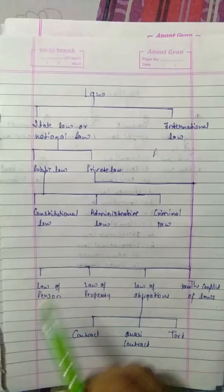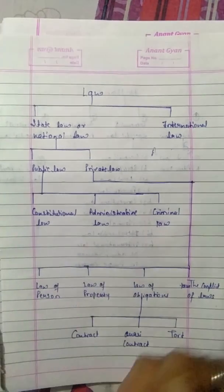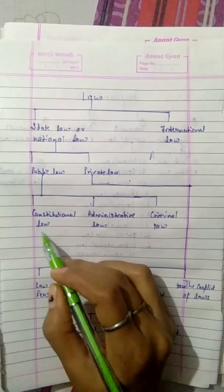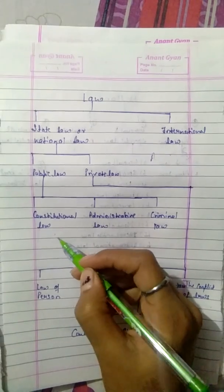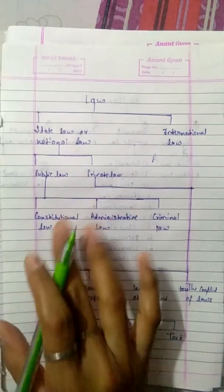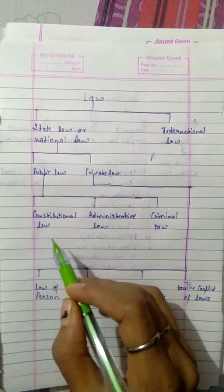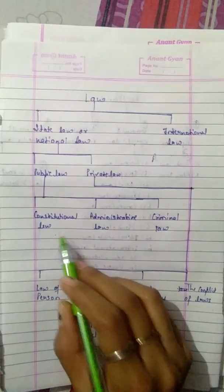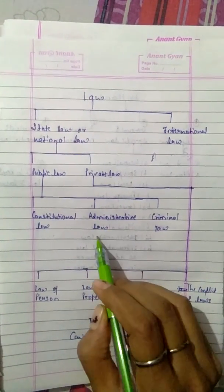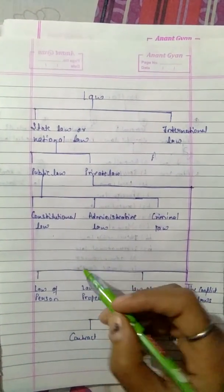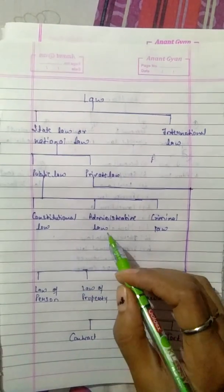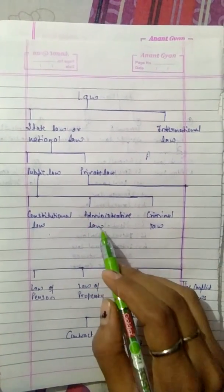So what is constitutional law? It defines how much power the government has. It is written in any country — we are reading from an international point of view, so India's constitution is written, but it doesn't mean it will be written in any country. Then we come to administration law — whoever has jurisdiction and power, that is covered by administration law.